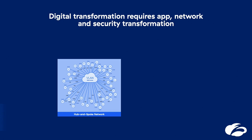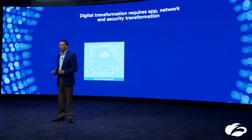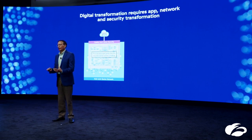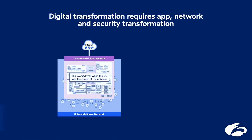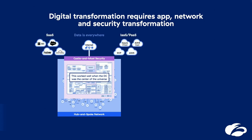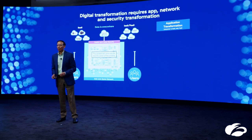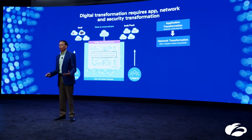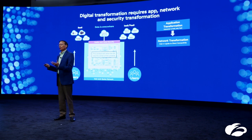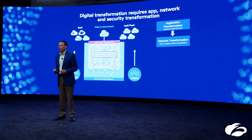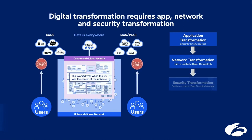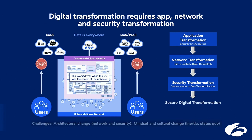Every company for the last 30 years has built a hub-and-spoke network, bringing traffic from each user and each branch to the data center. The data center was like a castle and moat — applications sitting there, protected by a range of appliances, including some DLP boxes. But we are all embracing cloud, SaaS applications on one side, public cloud on the other. We are transforming applications, and our data is everywhere. Our users are becoming more mobile and want to go direct for better performance, requiring network transformation from hub-and-spoke to direct connectivity. And if we do so, security breaks, because traditional security and data protection is sitting in a few choke points in the data center.